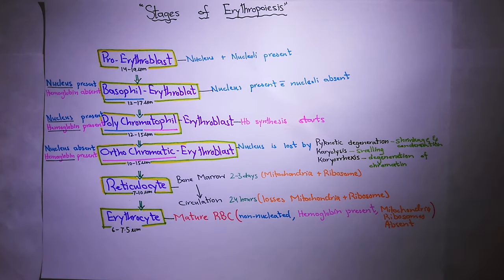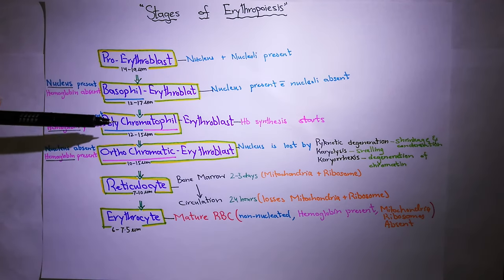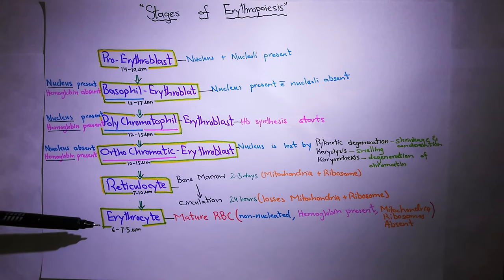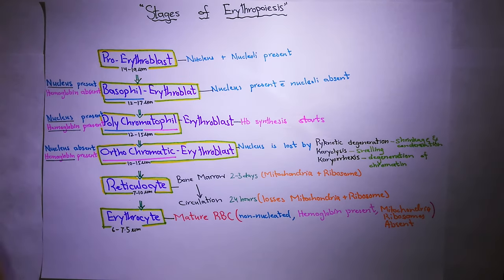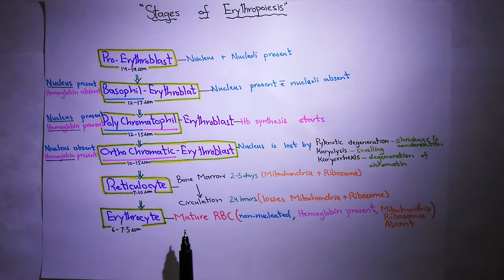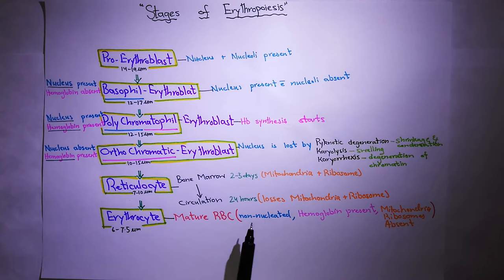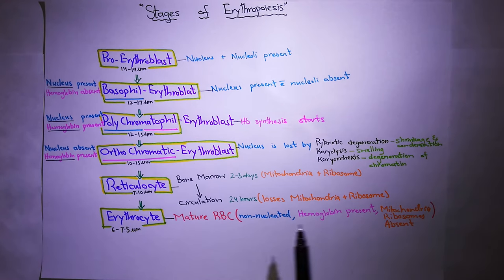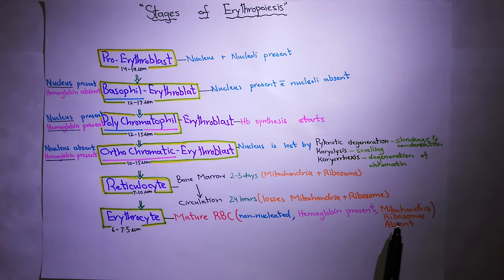Let's look at the stages and remember the key characteristics of mature RBC. A mature RBC has three important features: number one, it is non-nucleated — no nucleus; number two, hemoglobin is present; and number three, organelles such as mitochondria and ribosomes are absent.